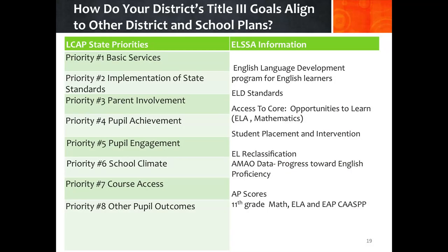Information obtained from the ELSA data analysis and surveys will provide valuable information that can be used when developing other plans, such as the Local Control Accountability Plan, or LCAP. Some examples of the types of information generated by the ELSA are noted on the right side of the column. Look at the eight state priorities in the left column. How can the ELSA information be used when developing your LCAP or other plans?